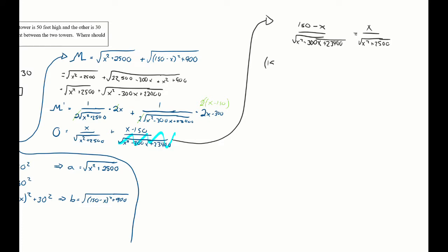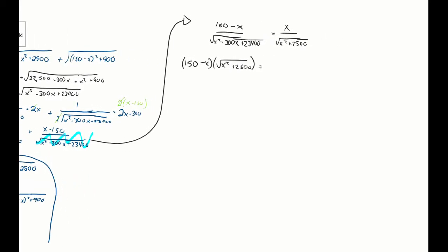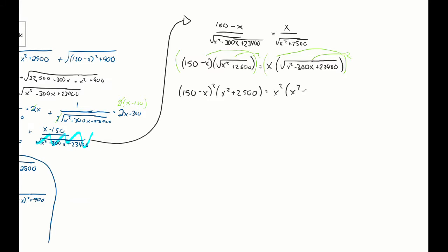I see square roots on both sides, so I square both sides to eliminate them. Squaring distributes over multiplication, so I get (150 − x)² · (x² + 2500) = x² · (x² − 300x + 23,400).